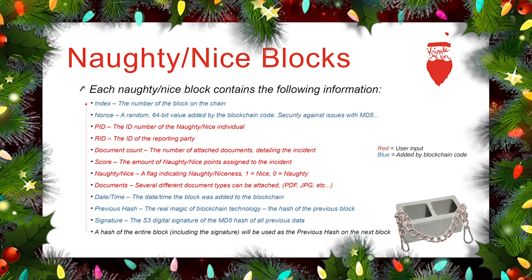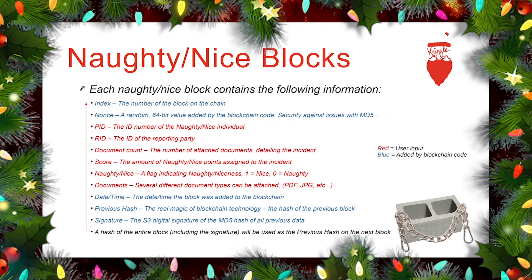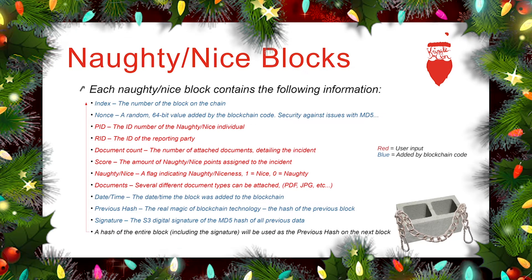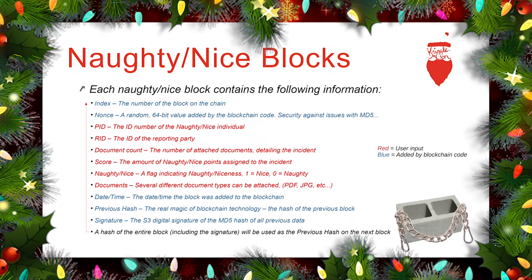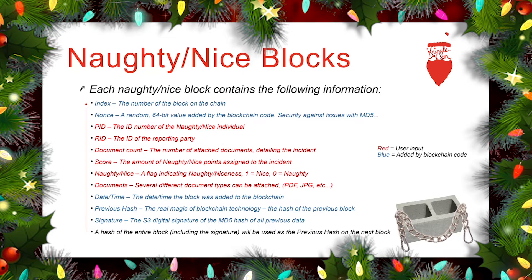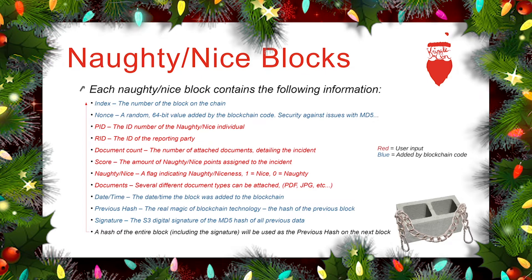The information that you will be adding includes the ID number of the naughty nice individual, your personal ID number as the reporting party, how many documents you'll be adding to the block, the score of the naughty nice points assessed — whether it was a naughty action or a nice action — and then you'll provide the documents. The blockchain code will add the date and time and the hash of the previous block, then send it off to the S3 system to be digitally signed. Once it's returned, the full block hash will be taken and used as the previous hash in the following block.